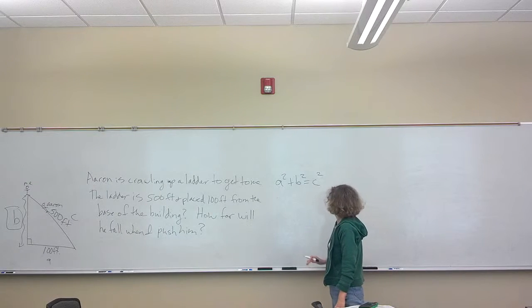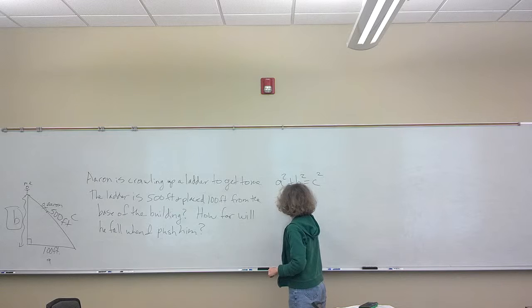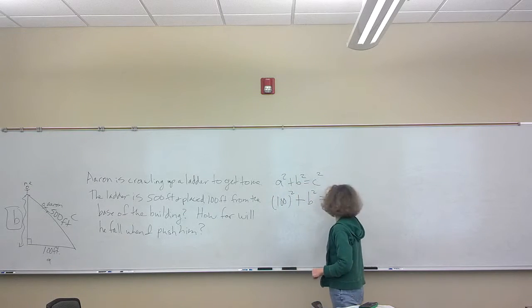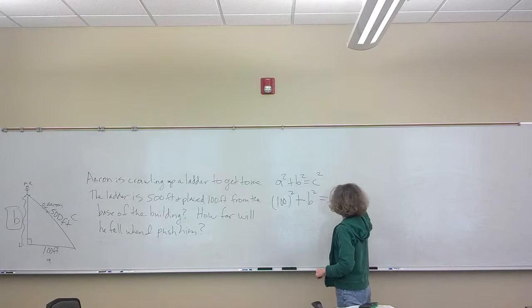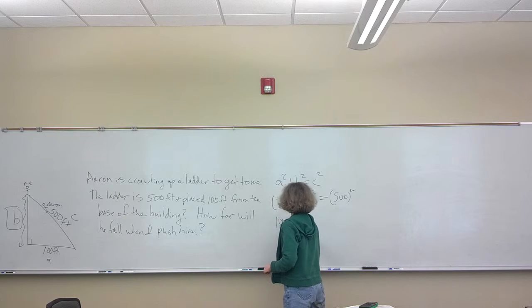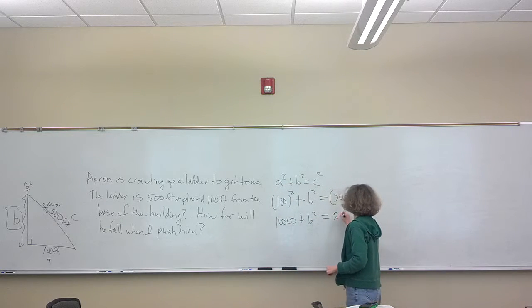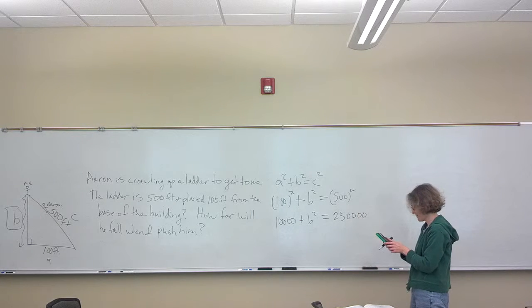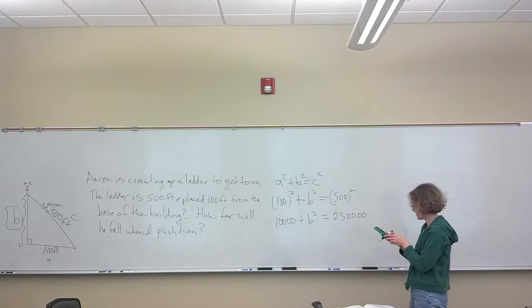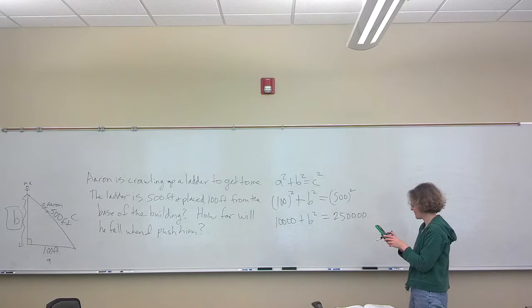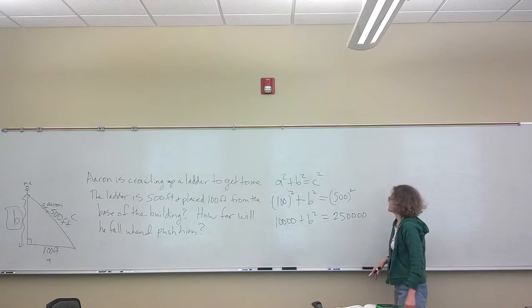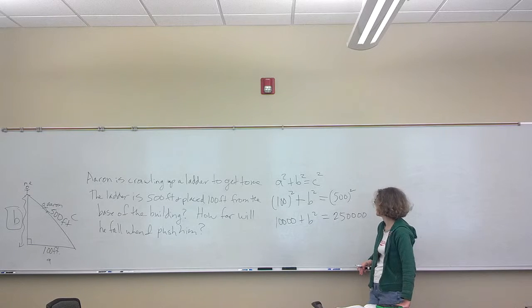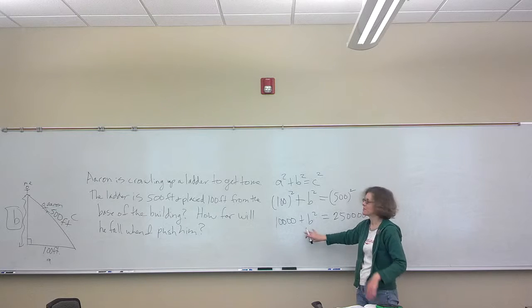We're going to use our same formula. So we've got our a squared plus b squared equals c squared. So we know our a, that's 100, and we're going to square that. The b we don't know, so it's b squared. And the c is 500, and we're going to square that. So now it looks slightly different than the last time. Before we had the variable over here in the letter. Now we've got it stuck in the middle of this thing.